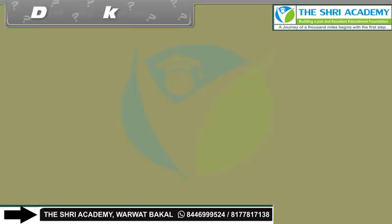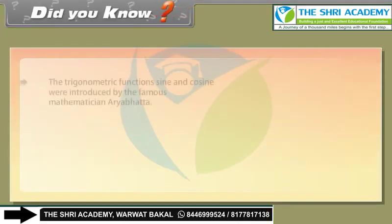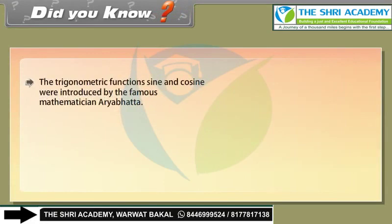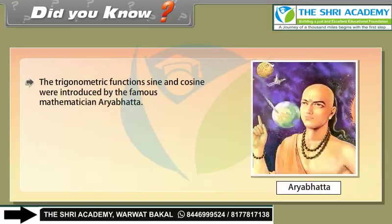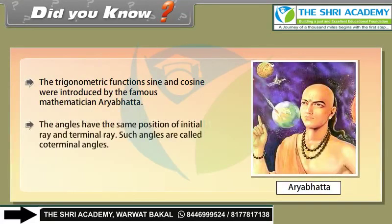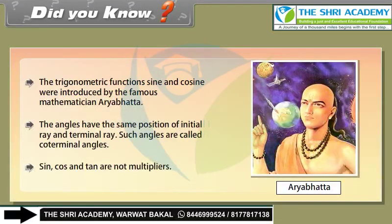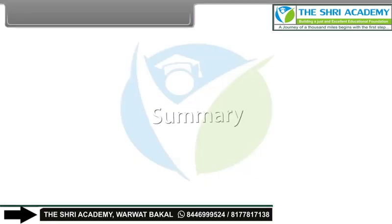Did you know? The trigonometric functions sine and cosine were introduced by the famous mathematician Aryabhata. Angles that have the same position of initial ray and terminal ray are called coterminal angles. Sin, cos, and tan are not multipliers.